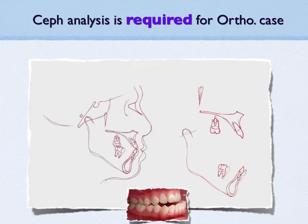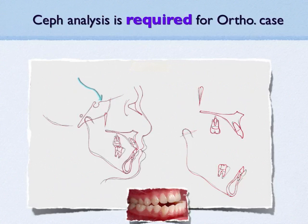In the cephalometric superimposition, we have the whole profile superimposed. The two colors represent post-treatment and pre-treatment respectively. We also evaluate the upper arch.